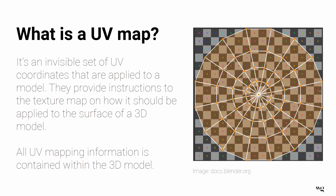So what is a UV map? Basically, it's an invisible set of UV coordinates applied to a model that provide instructions to the texture map on how it should be applied to the surface. All UV mapping information is contained within the 3D model — it's not a separate file like an image texture map. Imagine it almost like an invisible net draped over our model, where the intersections or knots of the ropes are where the coordinates lie, telling the texture how to apply itself correctly.